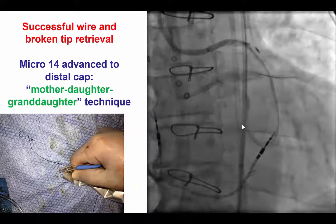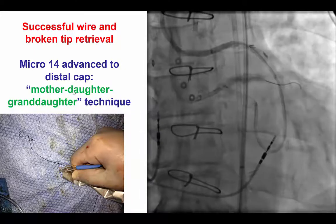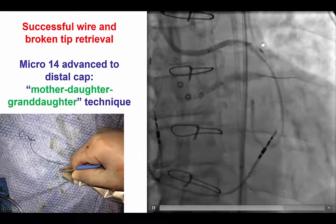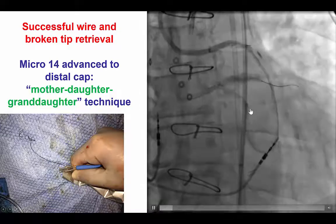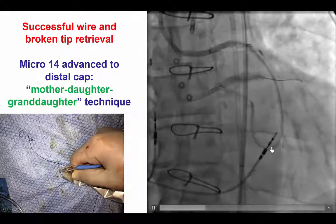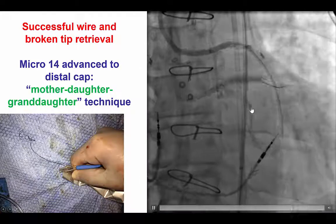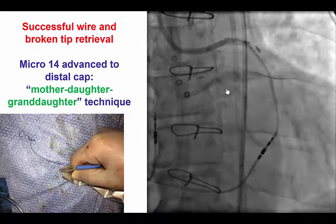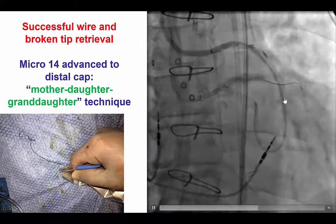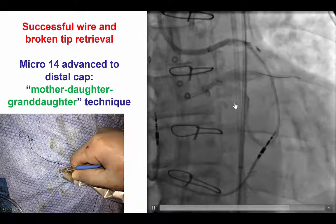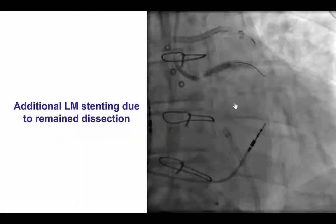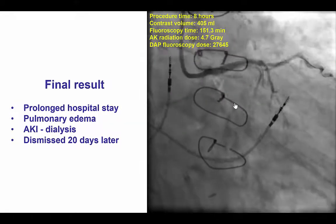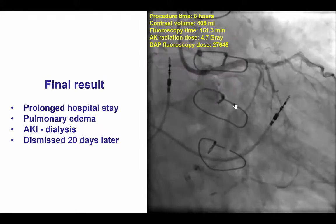Eventually we used the so-called mother, daughter, and granddaughter technique using two Guideliner catheters. An 8 French Guideliner was advanced to the proximal vein graft, and through this we advanced a 6 French Guideliner all the way through the vein graft, down the anastomosis, and up the native circumflex. Through this we were able to advance a Micro 14 microcatheter all the way to the fragment of the Caravel microcatheter, and retrieve both the entrapped Pilot 200 guidewire and the Caravel microcatheter tip.